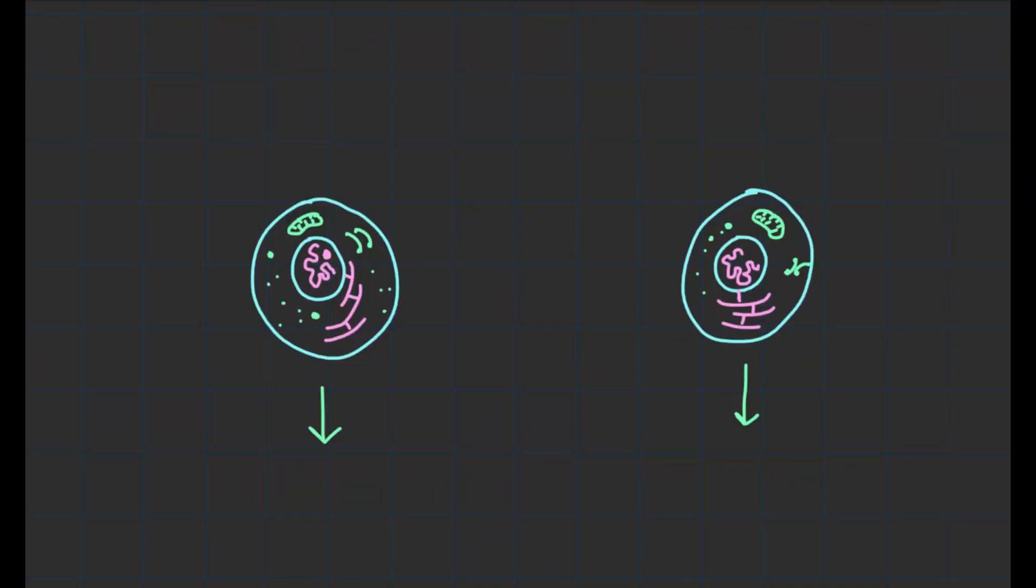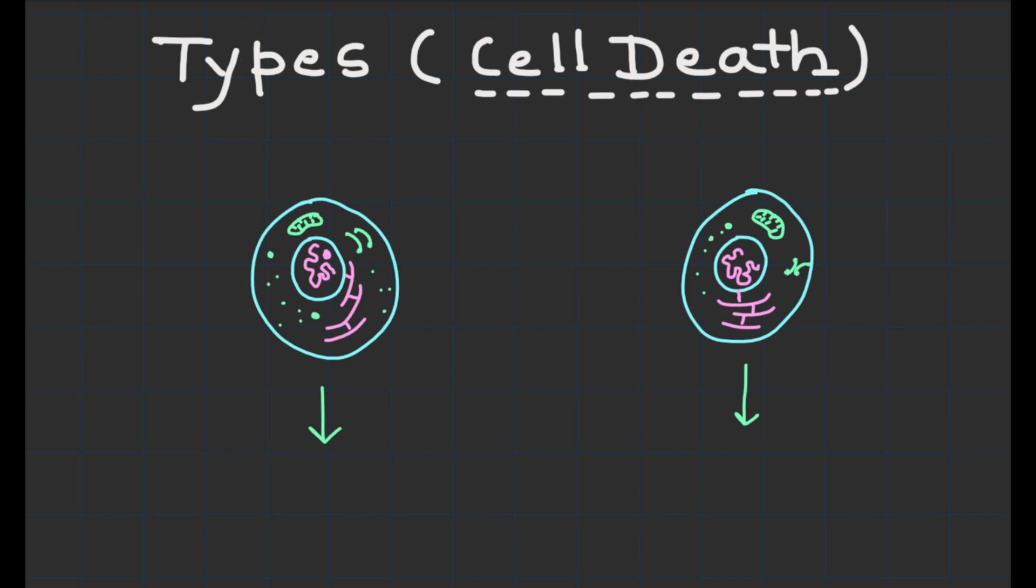Before we explore the mechanisms, it is important to understand the two main types of cell death: apoptosis and necrosis. Apoptosis, often referred to as programmed cell death, is a tightly regulated process that occurs during normal development and to eliminate damaged or infected cells.